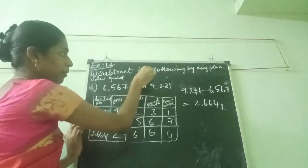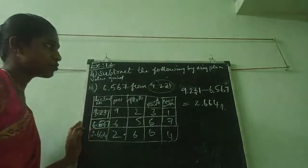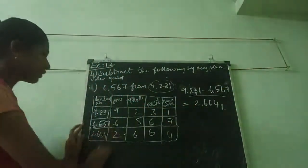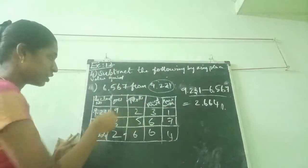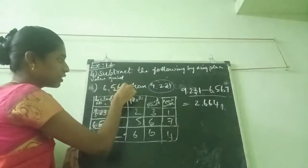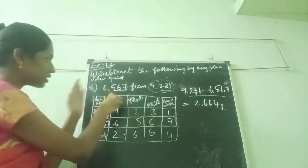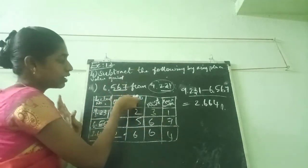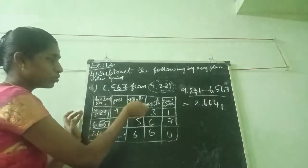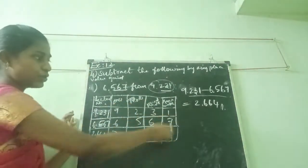Now we are going to see about 'from'. After this 'from', we want to write this one first. Next is this only. Like this we are going to see subtract. Now I am putting the place value they given, putting the boxes. That decimal number has 3 places — here they have given 3, here also they have given 3, that means equal integers. I am writing the question: 9, 2, 3, 1 and 6, 5, 6, 7. Now we are going to subtract.